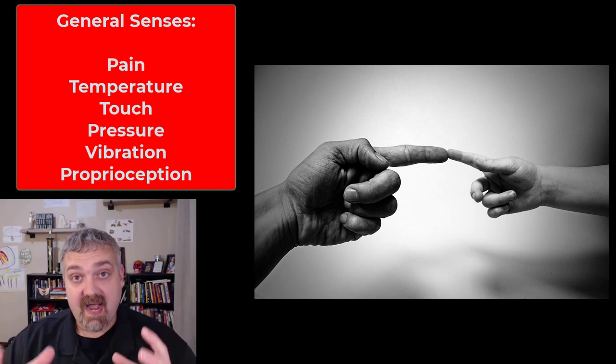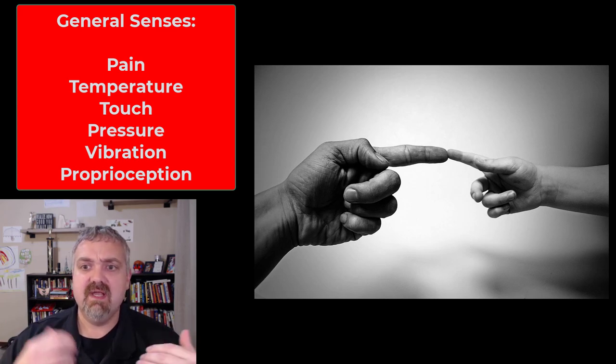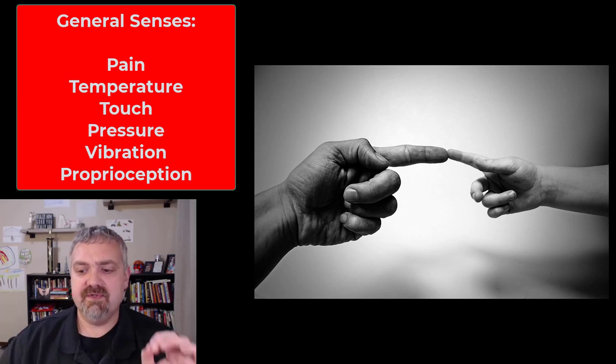Once your brain or you are consciously aware of it, it's now called a perception. Just so you know, that's the difference between a sensation and a perception. Not a big deal. But know which of those senses are your general senses.